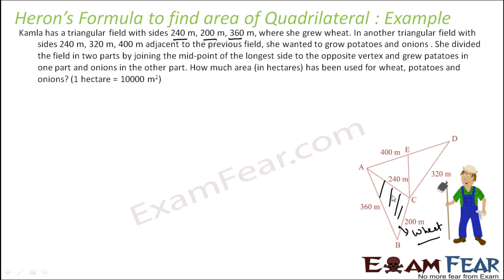Another triangular plot with sides 240, 320, and 400 is adjacent to the previous field. Since 240 is the common side, it will be shared between the two plots. This bigger field has sides 240, 320, and 400.